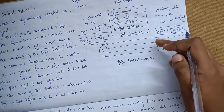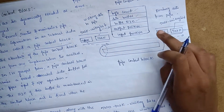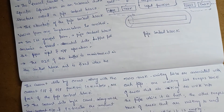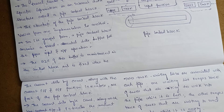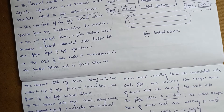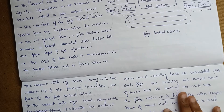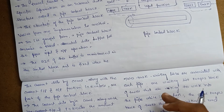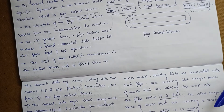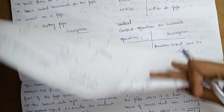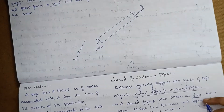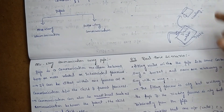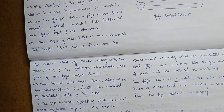This is the pipe control block. In the next video, let's start the event register. Here we covered pipe concepts: operations, PCB, two-way communications, one-way communications, and pipe states. These are the total topics of pipes.